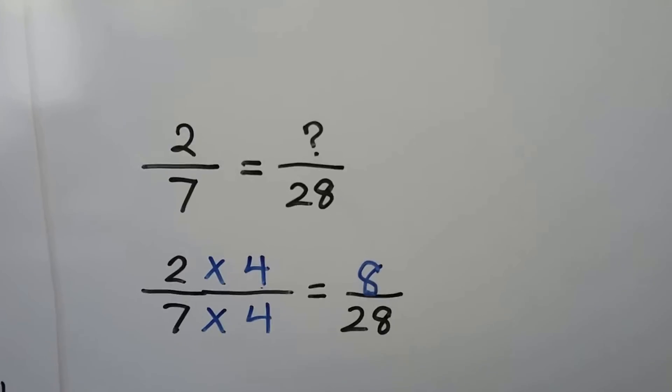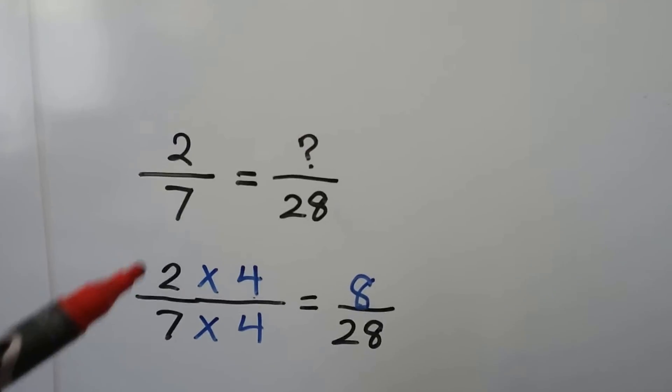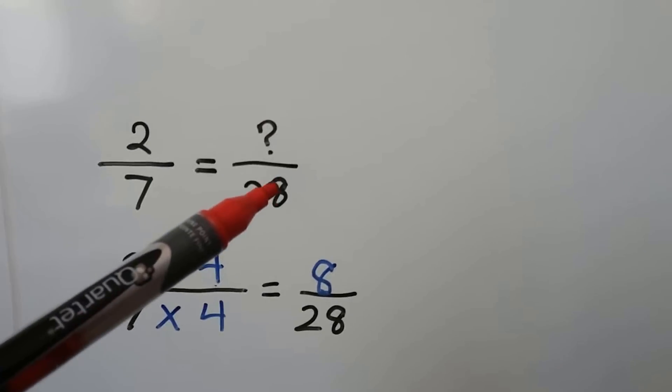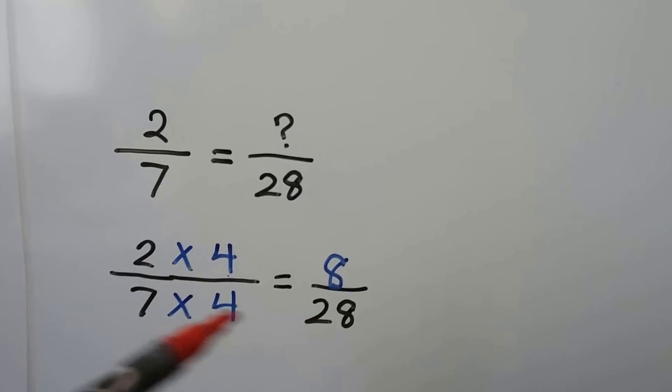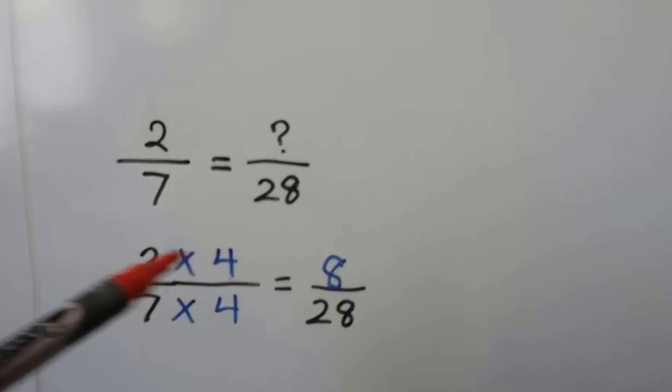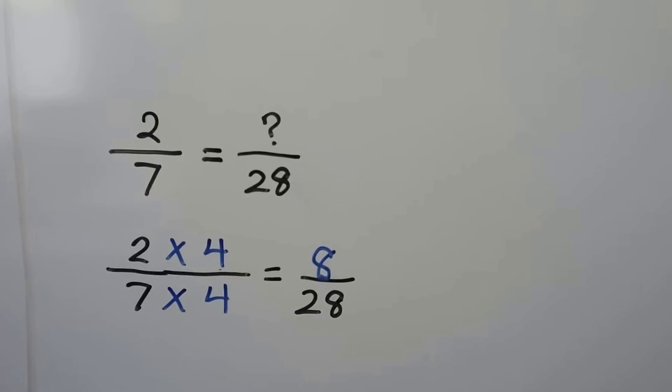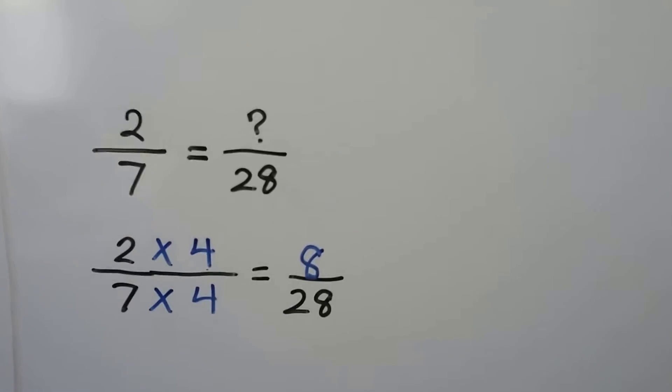We have 2/7. We don't know what the numerator is over here, so we ask ourselves, 7 times what is 28? 7 times 4. We multiply the numerator 2 by the same thing and we get an 8. We get 8/28 as an equivalent fraction for 2/7.